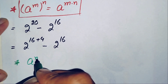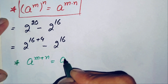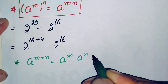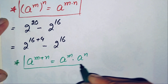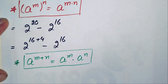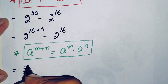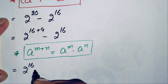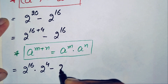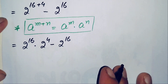The property is: a raised to power m plus n can also be written as a raised to power m times a raised to power n. Applying this, the equation becomes: 2 raised to power 16 times 2 raised to power 4, minus 2 raised to power 16.